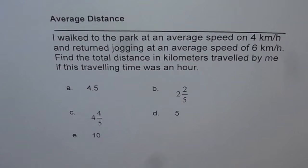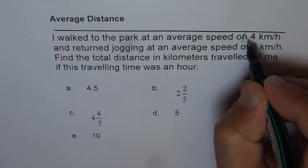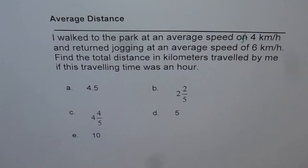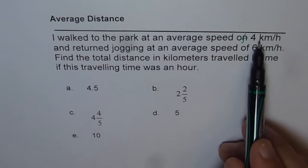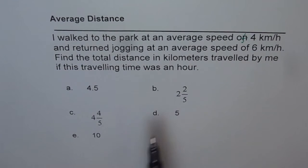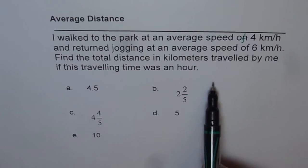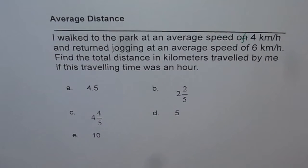The topic here is average distance. I walk to the park at an average speed of 4 km per hour and return jogging at an average speed of 6 km per hour. Find the total distance in kilometers traveled by me if the traveling time was one hour. So what we are given here is a total time of travel which is one hour, a walking speed towards the park of 4 and return speed of 6 km per hour. We need to find the total distance — that means the distance going to the park and returning. I would like you to do your calculations, pause the video and then look into my solution.